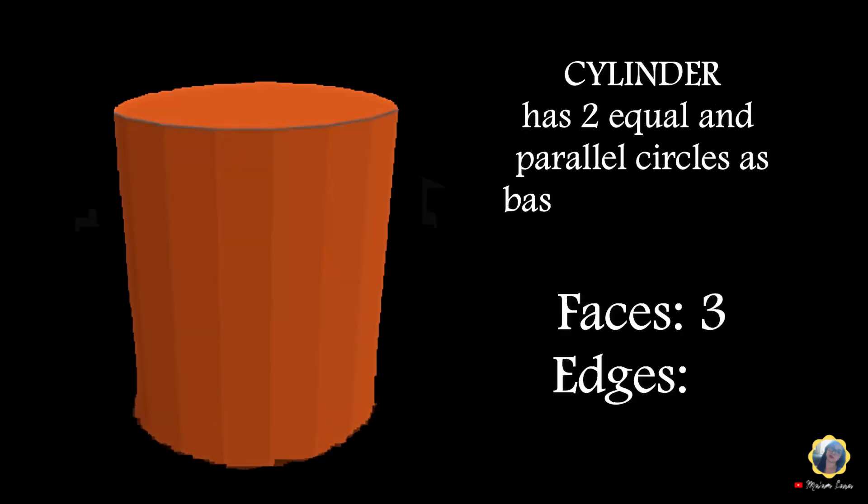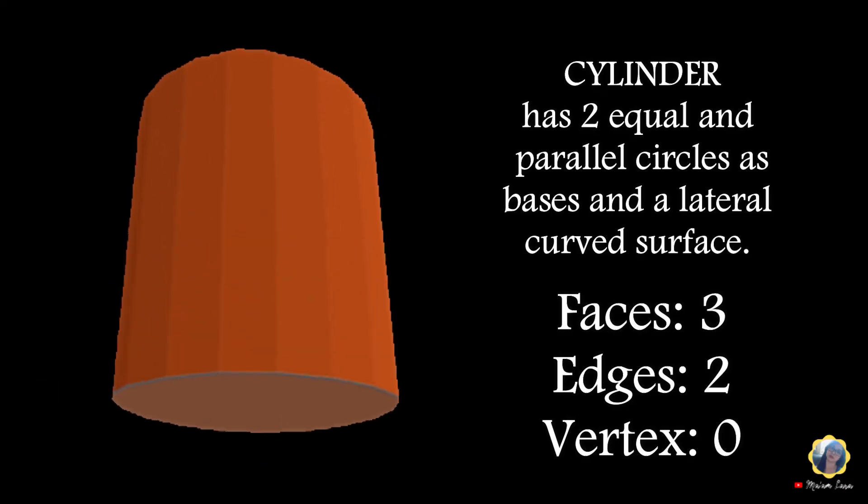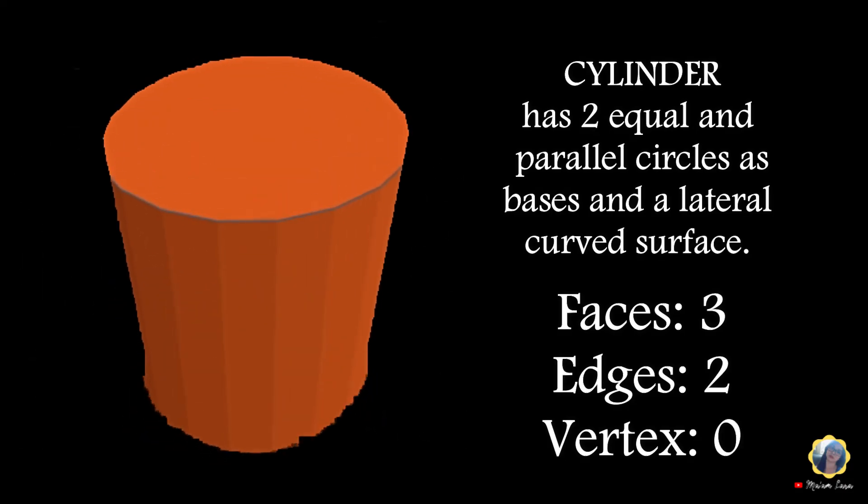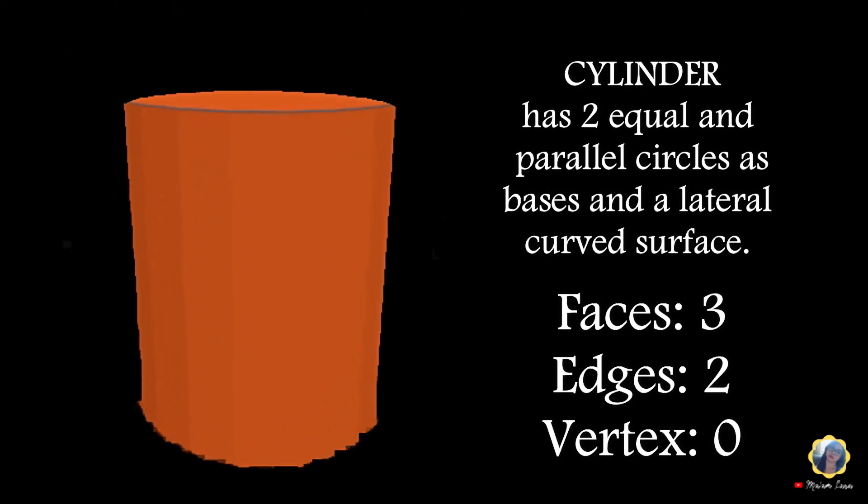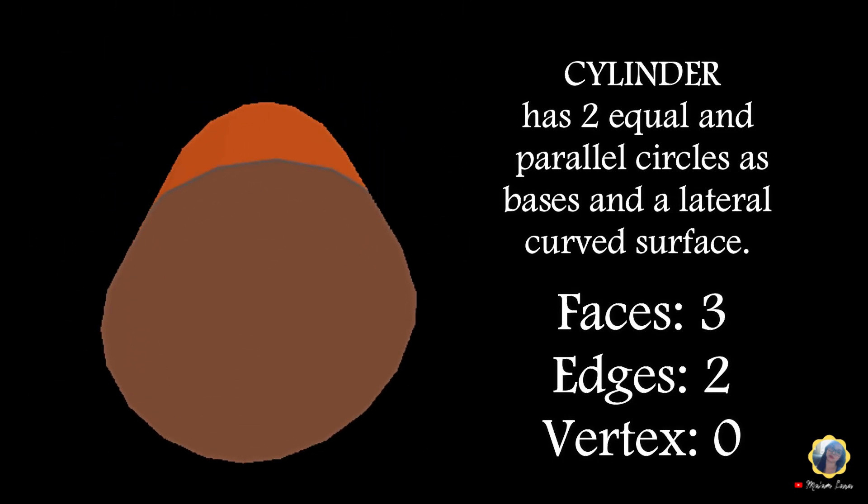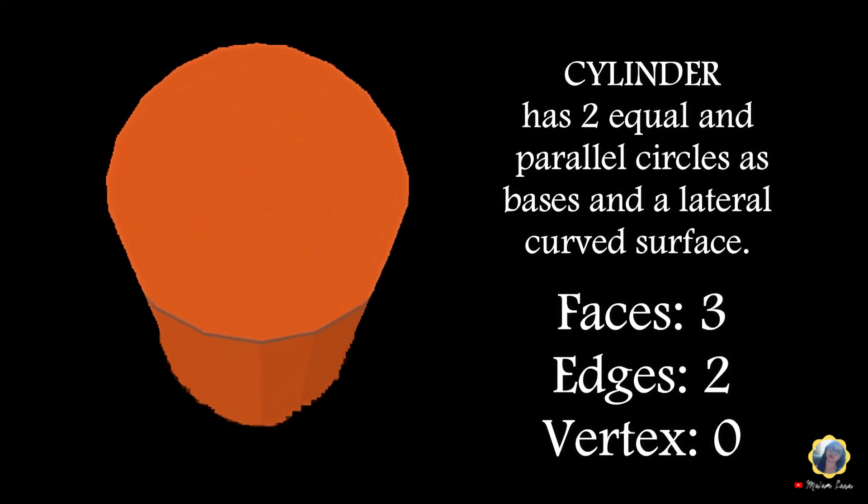Cylinder: has two equal and parallel circles as bases and a lateral curved surface. Faces: 3. Edges: 2. Vertices: 0.